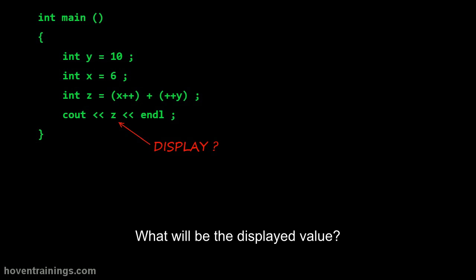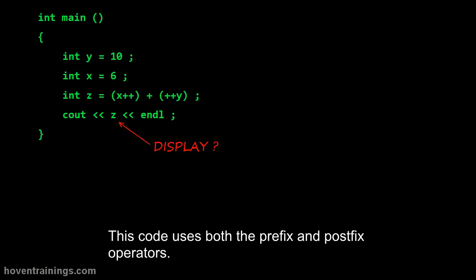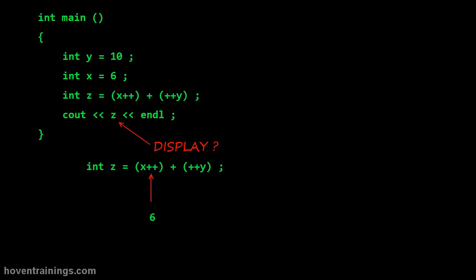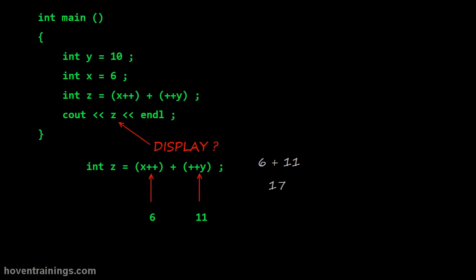What will be the displayed value? This code uses both the prefix and postfix operators. X appears as 6 and Y appears as 11. So the output would be 17.